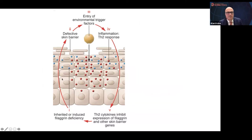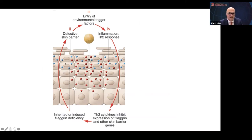This is a schematic of how you have a defective skin barrier from inherited or induced filaggrin deficiency, driven by environmental triggers that generate a TH2 response, creating a vicious cycle. Type 2 cytokines inhibit filaggrin expression, as do IL-17 and IL-22. So in advanced atopic derm, you've got the barrier defect being accentuated by immunological triggers.